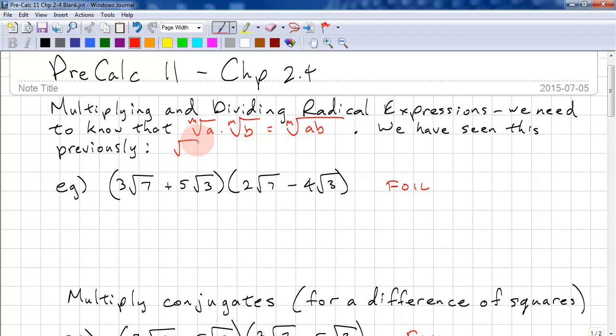Here's an example. Square root 2 times square root 2 equals square root 4. And this is equivalent to square root 2 times square root 2, which is just 2.